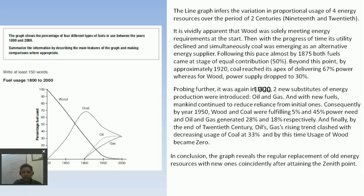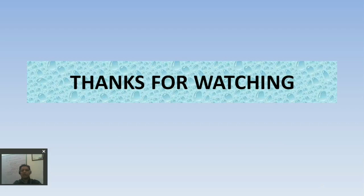Finally is the conclusion. In conclusion, the graph reveals the regular displacement of old energy resource with new ones. Initially there was wood which was replaced by coal, and then after coal there were oil and gas. The graph reveals the regular replacement of old energy resource with new ones, coincidentally after attaining the zenith point. That is the complete task. Thanks for watching. We will meet in next video. Bye bye, this is Praveen Khanna signing off.